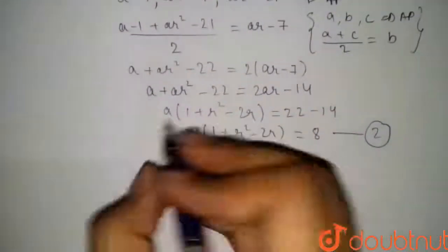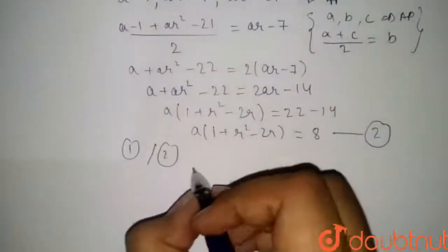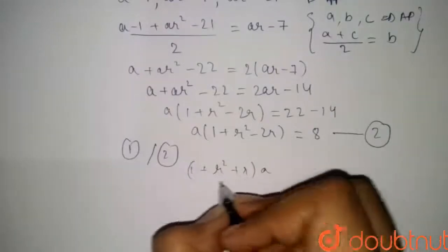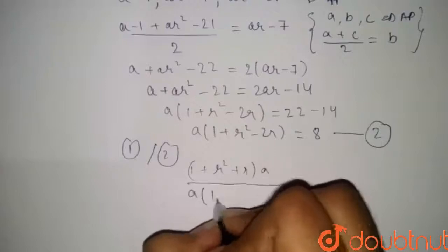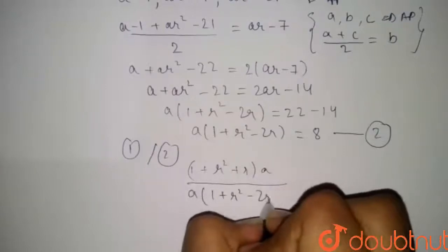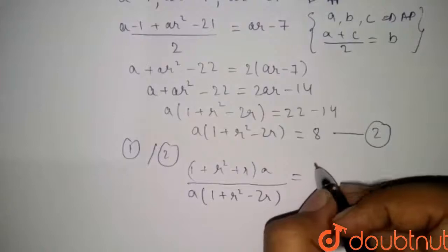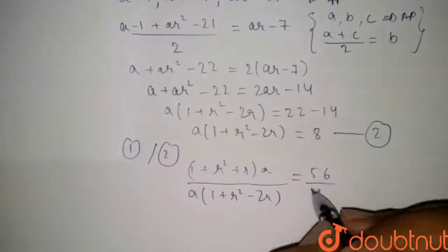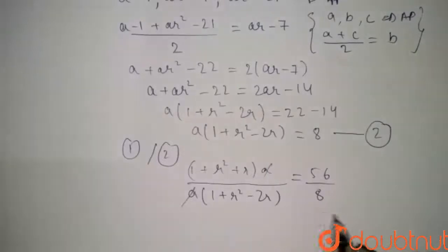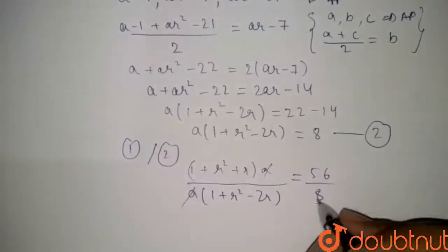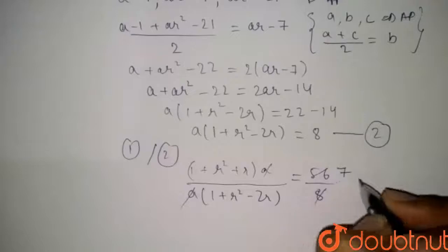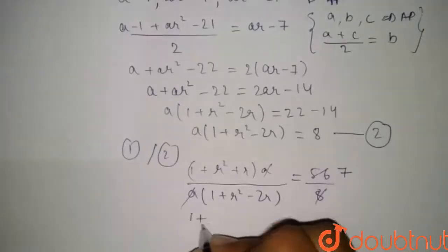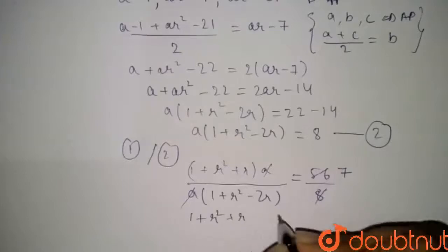Now dividing equation 1 by equation 2: a(1 + r + r²) / a(1 + r² − 2r) = 56 / 8 = 7. So (1 + r + r²) / (1 + r² − 2r) = 7. Cross multiplying gives 1 + r² + r = 7(1 + r² − 2r).